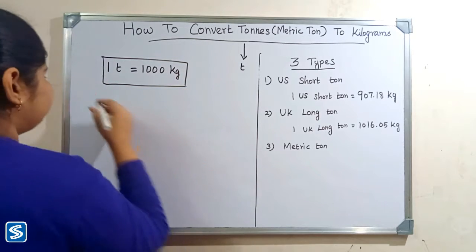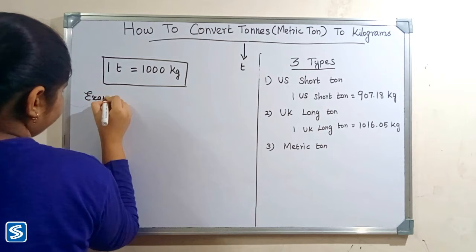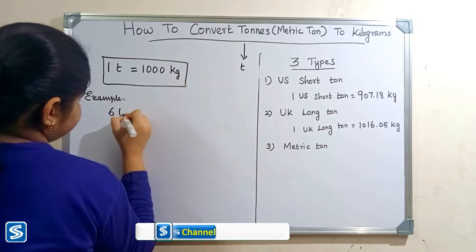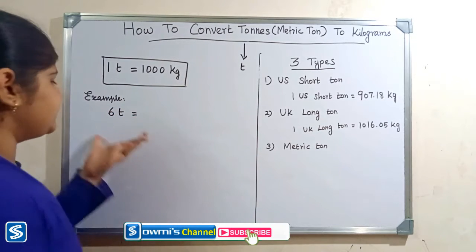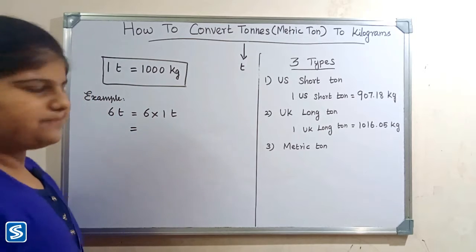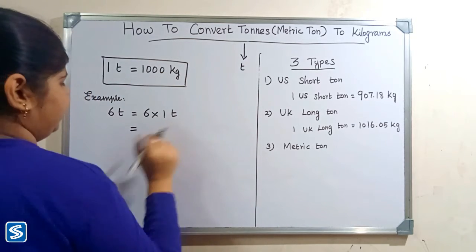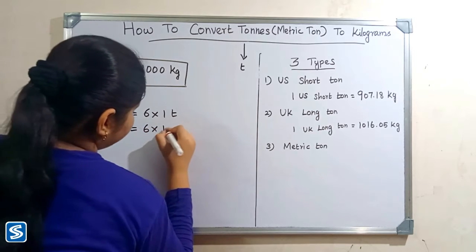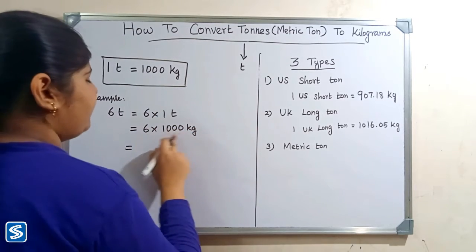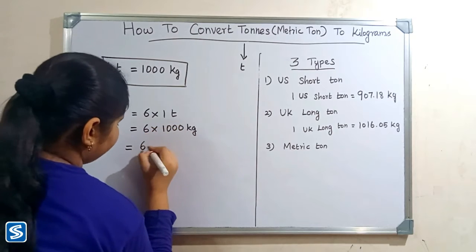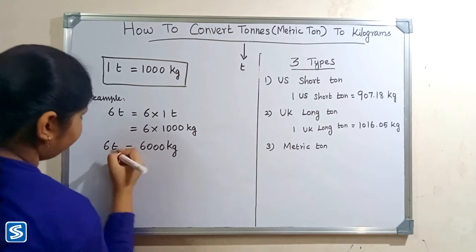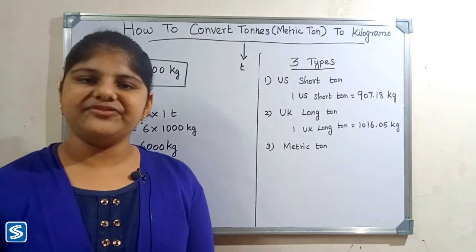Now we will take some examples. For example, six tons. Six tons can be written as six multiply one ton. We substitute 1000 kilograms in place of one ton, so six multiply 1000 kilograms equals 6000 kilograms. Six tons is equal to 6000 kilograms.